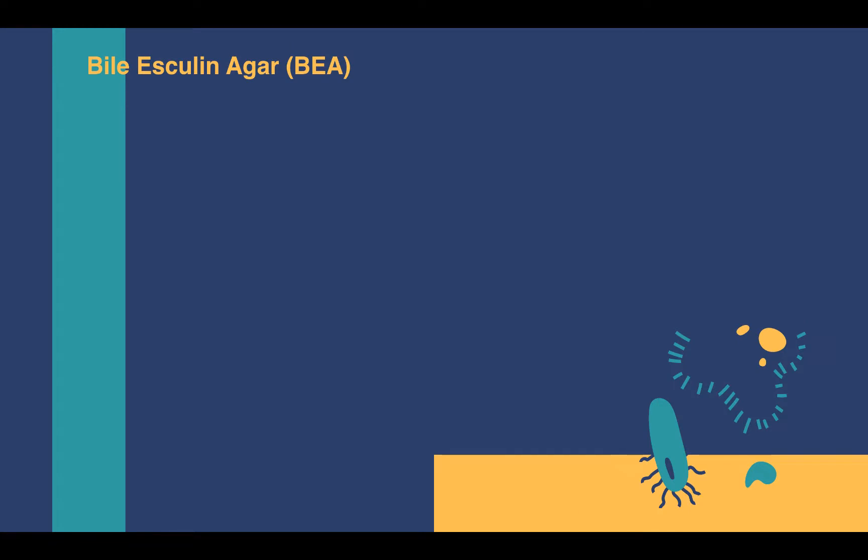The next test on our list is the bile esculin agar test, or BEA. This test answers the question: is the organism able to hydrolyze esculin in the presence of bile? Some organisms possess the enzyme esculinase and can break down esculin, but this test is particularly looking for organisms that can break down esculin in the presence of bile. Organisms that can do this are much more limited, making this medium very selective.